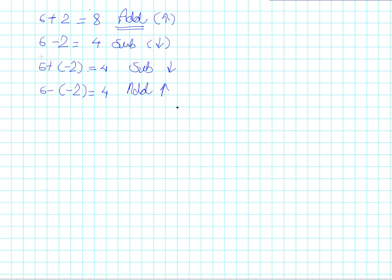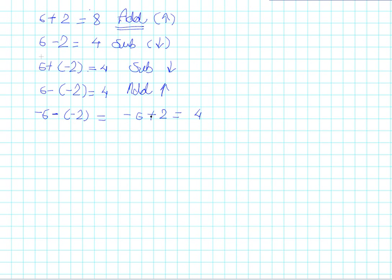One more case: if I have a negative number and I want to subtract a negative number from it — for example, negative 6 minus minus 2 — minus of minus 2 is the additive inverse of negative 2, which equals negative 6 plus 2. This turns out to be addition of one positive and one negative number, giving a result of negative 4. The sign of the answer is that of the bigger number in absolute value, which here is negative 6, so the sign is negative.